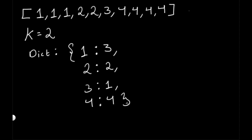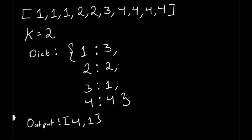So the two most frequent elements are 4 and 1 — that's our expected answer. But how do we get that? A dictionary by itself does not arrange elements by ascending or descending order. To arrange by largest frequencies, we can use a heap queue, which is a special tree structure where the parent node has a higher or equal value compared to its children. Python has a built-in heap queue module we can use.